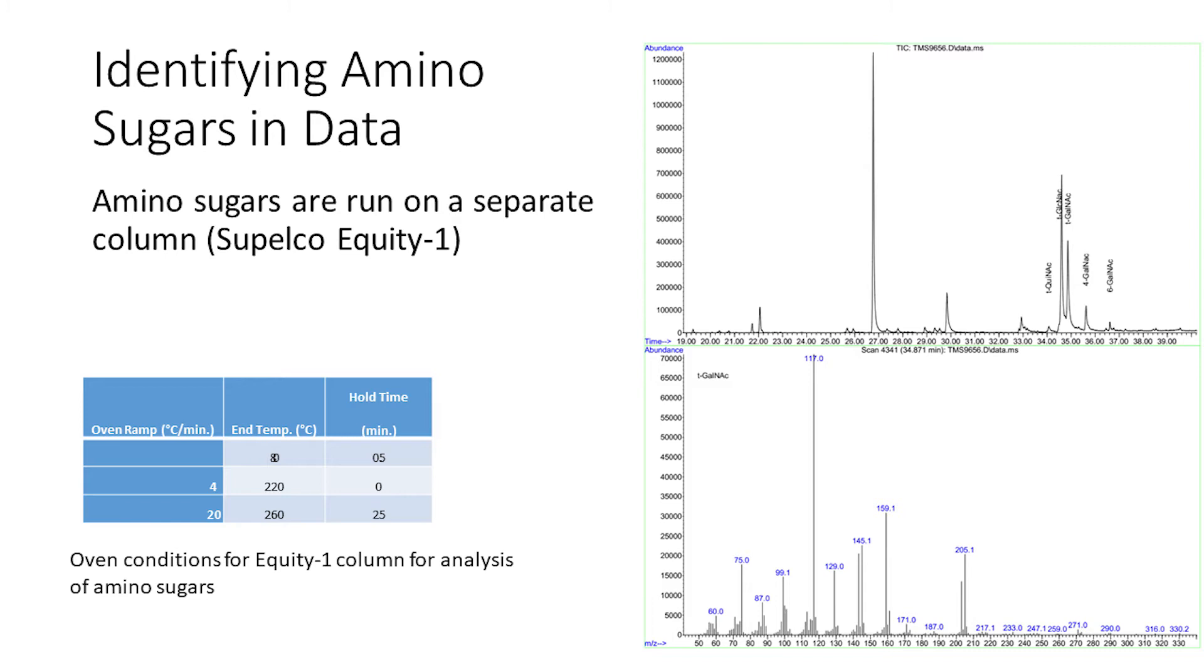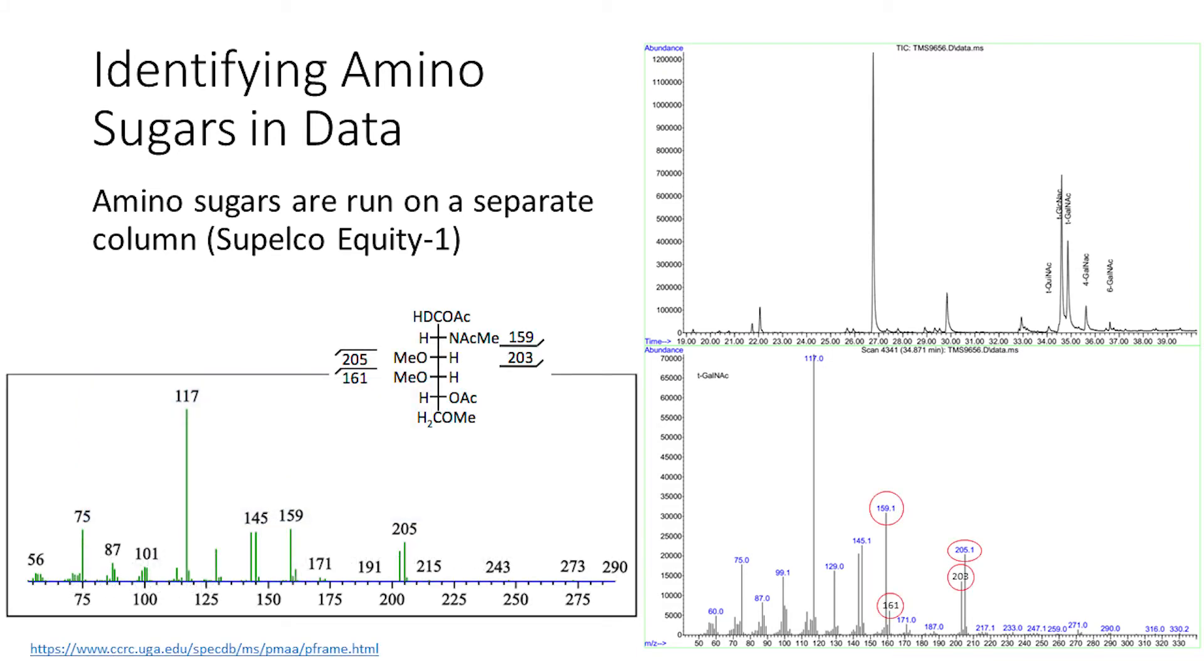To observe the amino sugar PMAA residues, we use a separate Supelco Equity 1 column. On the right, we have an example of a linkage GC chromatogram on top of a mass spectrum for a terminal N-acetyl galactosamine. Similar to identifying neutral sugars, we can use the CCRC PMAA database to look at fragmentation and match mass-to-charge ratio values to identify our peaks.